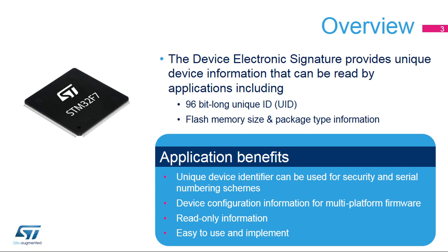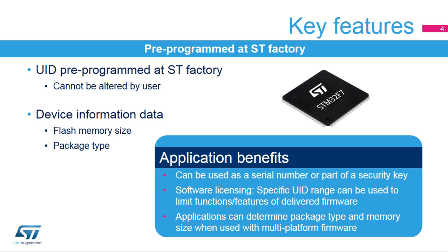Applications can benefit from a unique identifier that can be used as a serial number or as part of a security key. It can also be used to manage software distribution and licensing features based on the UID. The unique identifier and other device information are pre-programmed at the ST Factory and cannot be altered by users. This identifier can be used as a security key or serial number, as well as an identifier for software licensing.